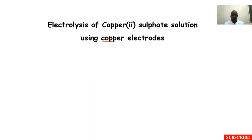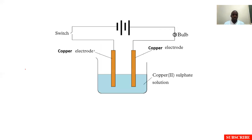During the first version where we used graphite, we saw products being formed — oxygen and copper. But in this case, we want to see what actually happens when we use copper electrodes in copper sulfate solution. When you look at our setup, it is the same, just that in this case we are going to be using our copper electrodes instead of graphite or carbon electrodes.